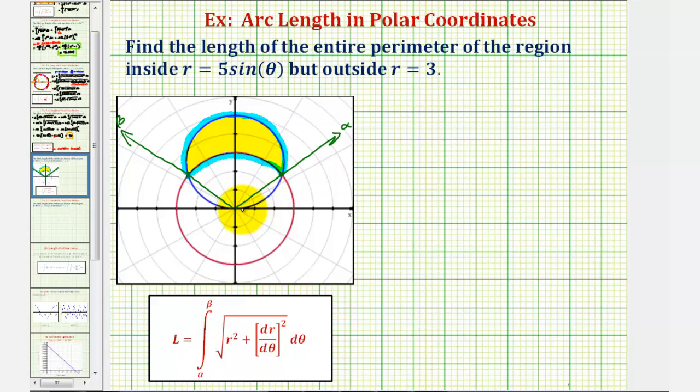The angles would have to pass through these two points of intersection, which would occur when these two equations have the same value of r. Since they're both solved for r, these angles would satisfy the equation five sine theta equals three. If we divide both sides by five, we have sine theta equals three fifths.